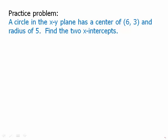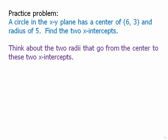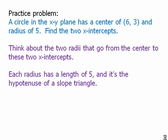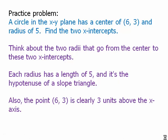A circle in the XY plane has a center of 6,3 and a radius of 5. Find the two X intercepts. Think about the two radii that go from the center to these two X intercepts. Each radius has a length of 5 and it's the hypotenuse of a slope triangle. Also, the point 6,3 is clearly 3 units above the X axis. So let's think about all this visually.